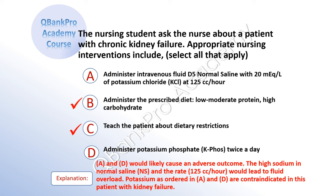The correct answer is B: administer the prescribed diet, low to moderate protein, high carbohydrate. And C: teach the patient about dietary restrictions. Explanation: A and D would likely cause an adverse outcome. The high sodium in the normal saline and the rate at 125 cc per hour would lead to fluid overload. Potassium as ordered in A and D are contraindicated in this patient with kidney failure.